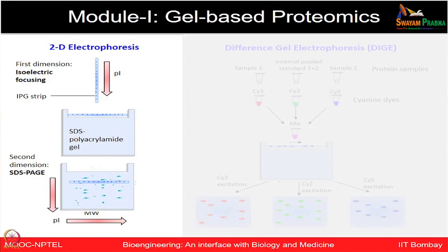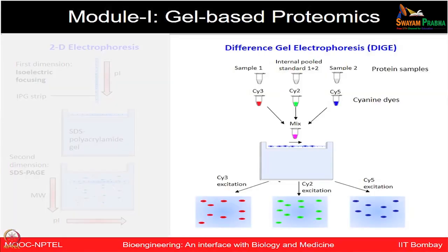For example, gel-based proteomics: as mentioned, you can separate proteins based on their molecular weight using SDS-PAGE, or you can separate proteins based on both molecular weight and isoelectric point in the process of two-dimensional gel electrophoresis. Or, if your intention is to quantitate proteins from control and test conditions, you can use the new technology called difference gel electrophoresis or DIGE.